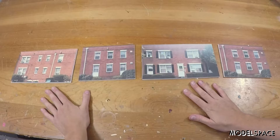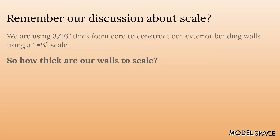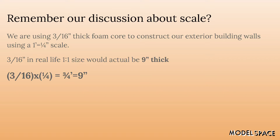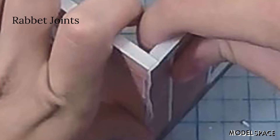Now we have our four walls and we can glue them together with hot glue. But before we do that, let's talk a little bit about our material thickness. Remember our discussion about scale? We're using 3/16 inch thick foam core to construct our exterior building walls, using 1 foot equals 1 quarter inch scale — so how thick would those walls be in real life? Our model material in real life would actually be nine inches thick. The easiest way to assemble these walls is to use a butt joint, where you just butt up your two sheets of material together. But in doing this we're actually adding nine inches of thickness to each wall, which makes our plan inaccurate. So to avoid adding extra thickness to our plan dimensions, I suggest using a variation on a rabbit joint.